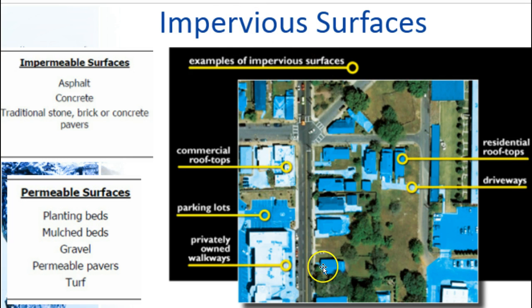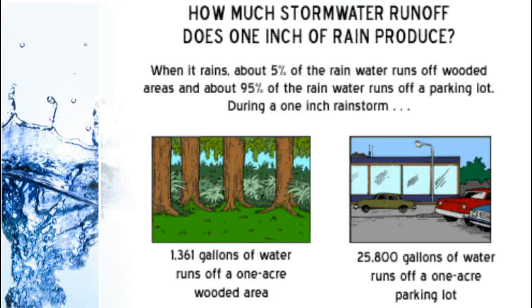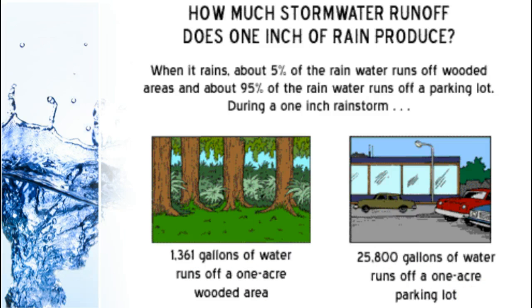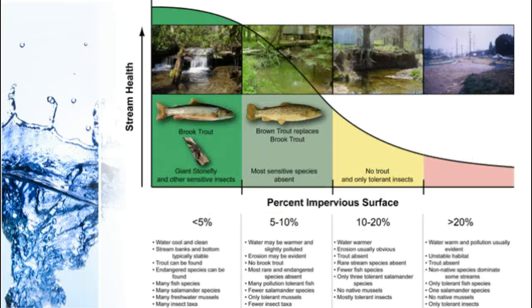Impermeable means the same thing as impervious. The more development we have, the more impervious surfaces we have, and the impact of that is really significant. Just one inch of rain on a one-acre area will cause a certain number of gallons of runoff in a wooded area — but look how much that increases when you turn that wooded area into a parking lot. It's very significant, and this compounds when you look at whole cities built this way.